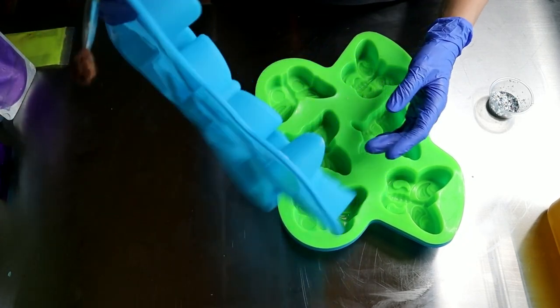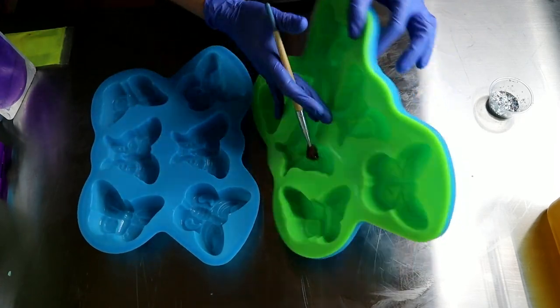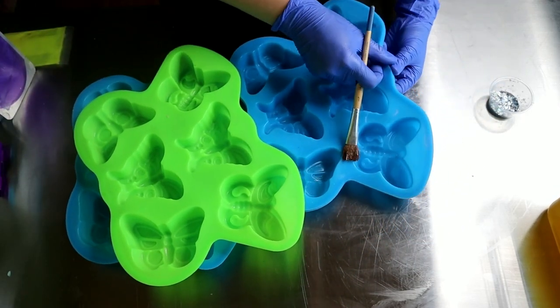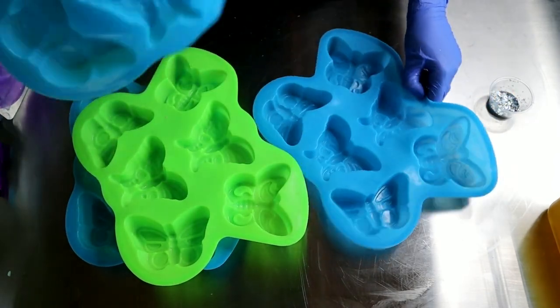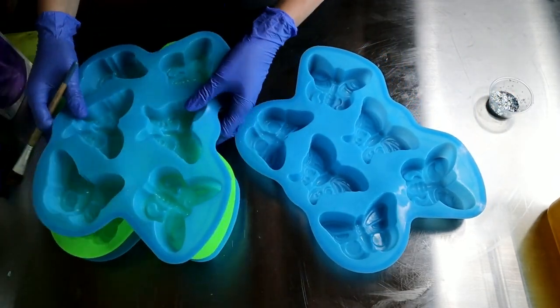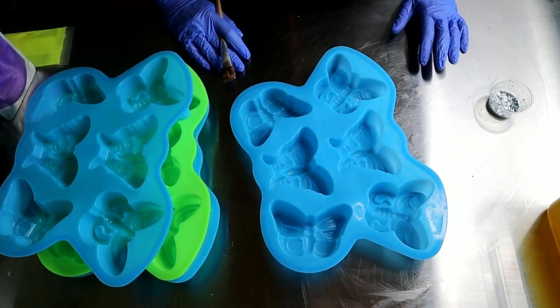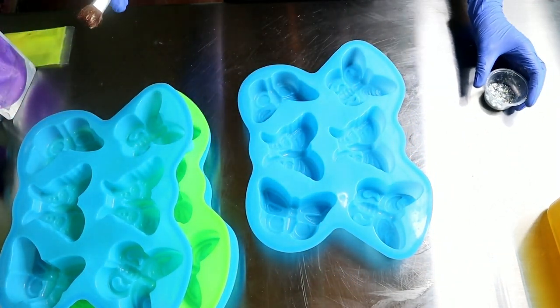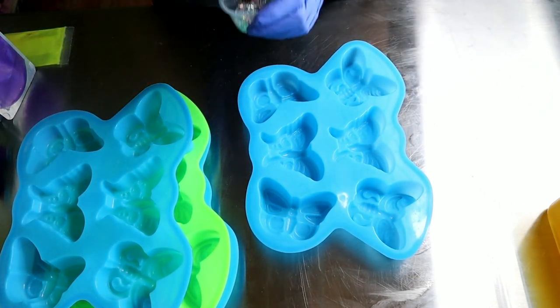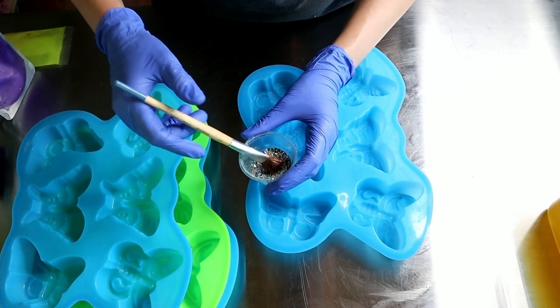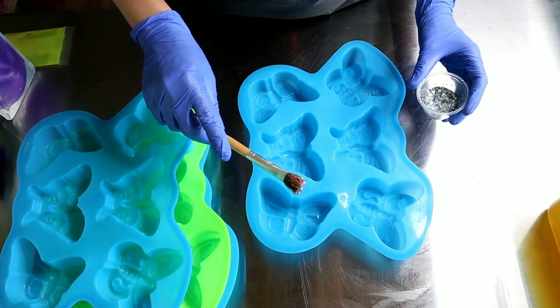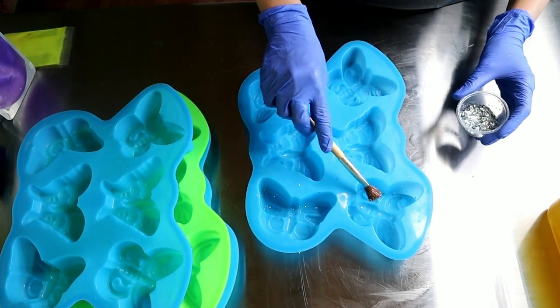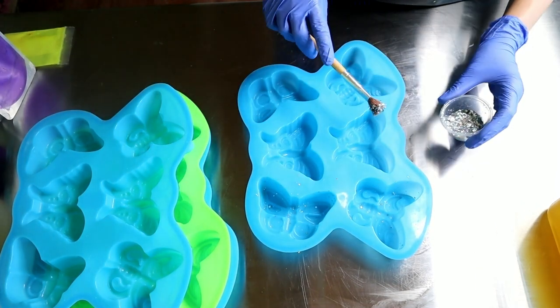So I inherited these nice, beautiful, large butterfly molds and they've just kind of been sitting here. I didn't plan on doing anything with them. Some inspiration struck me and that is what we're doing today. I have some eco glitter in here, biodegradable glitter. And I think what I'm going to do is just sprinkle some of this on the inside at first.